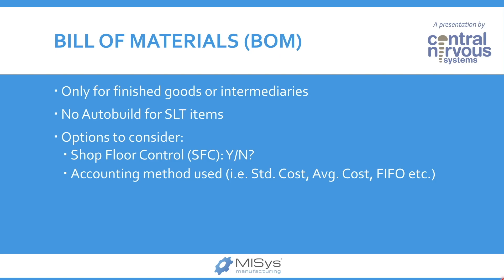Also, if we have decided to use serial and lot tracking for our items, then the auto build function available in Mises will not be functional if serial lot tracking is turned on. Other options to consider are shop floor control — whether we're going to be using shop floor control or not — and our accounting methods.